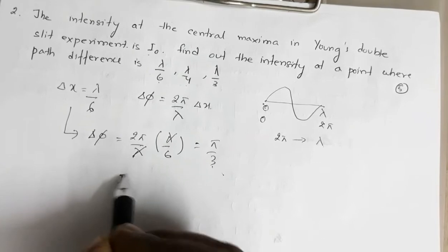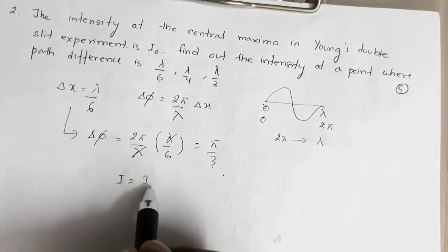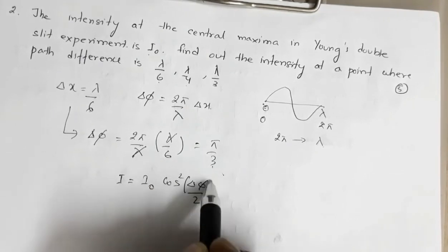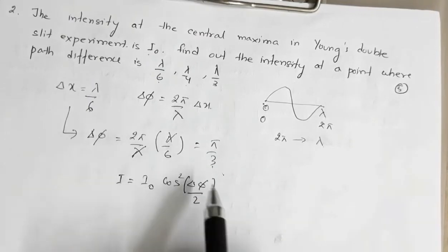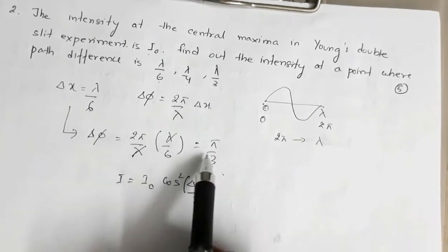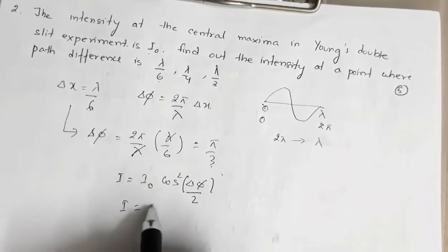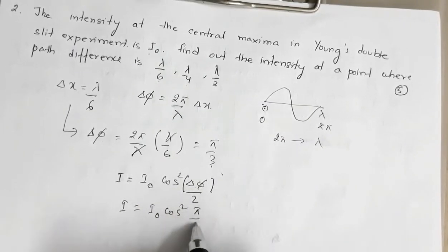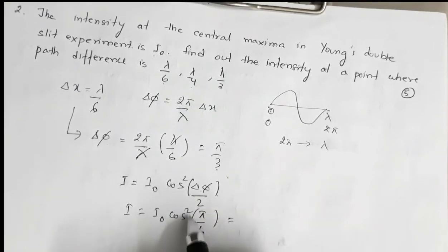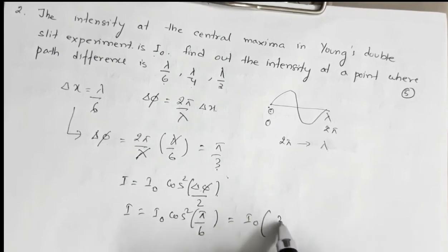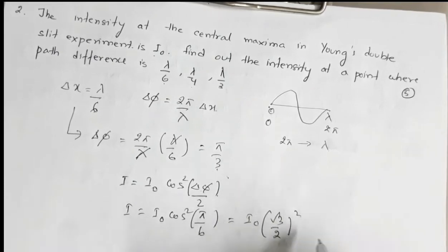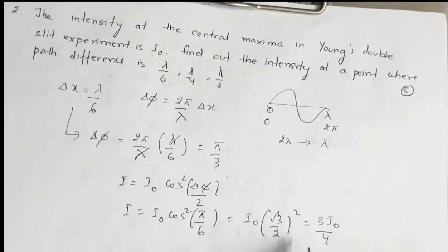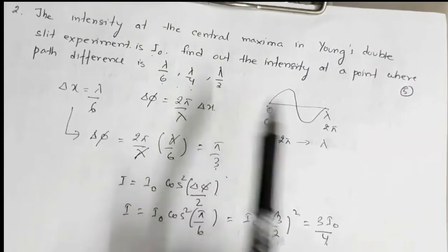Substituting values: n = 3, λ = 520×10⁻⁹ m, D = 1 m, d = 1.5×10⁻³ m. Solving gives 1.04×10⁻³ m. For part B, suppose the nth fringe of wavelength λ1 = 650 nm coincides with the mth fringe of λ2 = 520 nm. Setting nλ1D/d = mλ2D/d, we get n/m = 520/650 = 4/5.